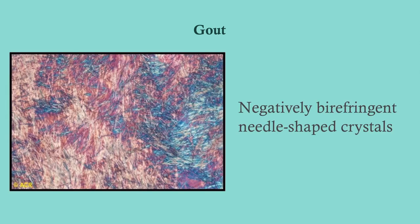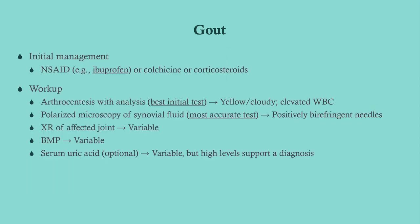This is what you'd see on polarized microscopy: negatively birefringent, needle-shaped crystals — remember this from Step 1. The arthrocentesis will show an inflammatory picture: yellowish, cloudy fluid with an elevated white count, but not as high as in septic arthritis. X-ray of the affected joint will be variable; you may see soft tissue swelling. BMP will be variable. Uric acid is also variable — high levels support the diagnosis, but normal levels do not rule it out.